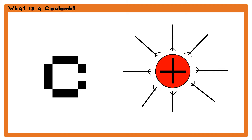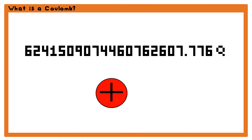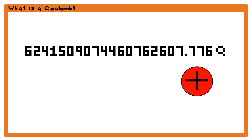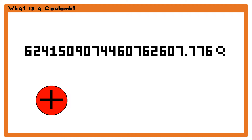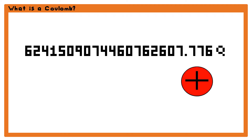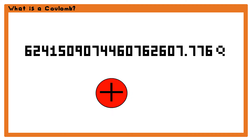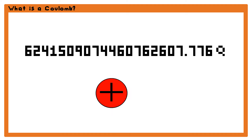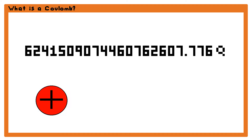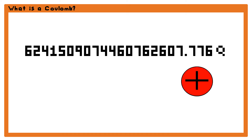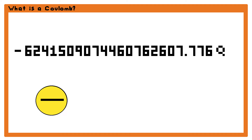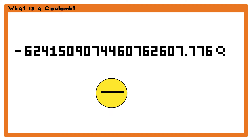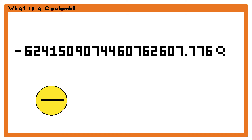In technical terms, a coulomb is defined as 6,241,509,074,460,762,607.776 — or about 6.2415 times 10 to the 18th elemental charges. That is the amount of charge in that many protons. Electrons carry negative charge, so that previously mentioned number of electrons would have negative 1 coulomb.